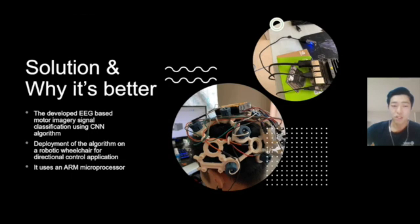The deployment of the algorithm on a robotic wheelchair for directional control application. It is better because it uses an ARM microprocessor, which is cheaper, requires less power, and uses less parts to assemble.